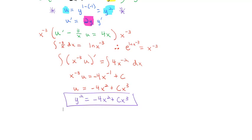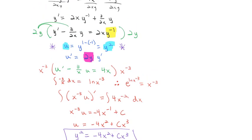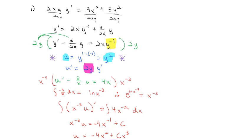All of that in red should have been review of solving linear equations. The new part is identifying the Bernoulli equation and making the substitution to convert it, so we can use our existing methods for linear equations. Substituting back with u equals y squared, our final implicit solution is y squared equals negative 4x squared plus cx cubed.